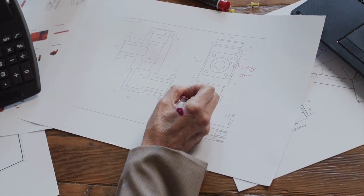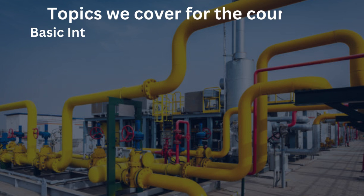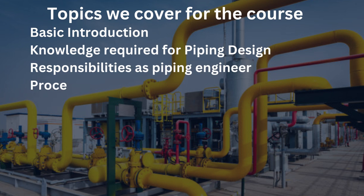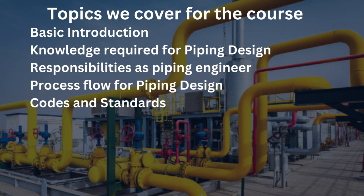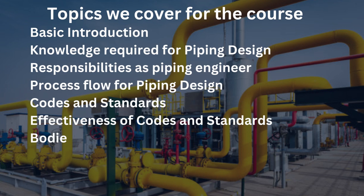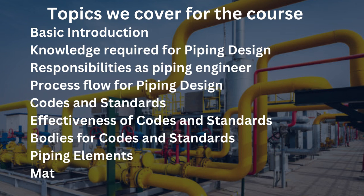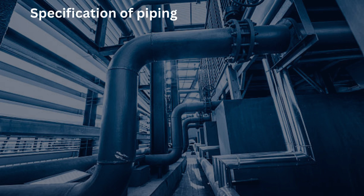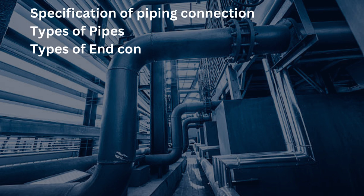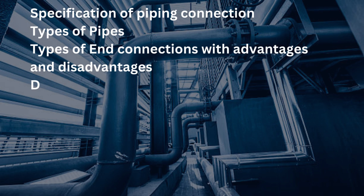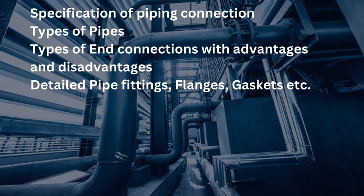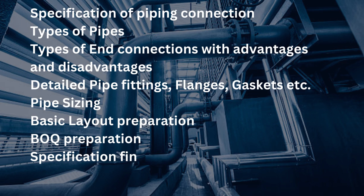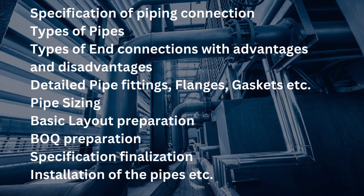Topics we cover for the course are as follows: Basic Introduction, Knowledge Required for Piping Design, Responsibilities as Piping Engineer, Process Flow for Piping Design, Codes and Standards, Effectiveness of Codes and Standards, Bodies for Codes and Standards, Piping Elements, Material Selection of Piping Components, Specification of Piping Connection, Types of Pipes, Types of End Connections with Advantages and Disadvantages, Detailed Pipe Fittings, Flanges, Gaskets, Pipe Sizing, Basic Layout Preparation, Block Preparation, Specification Finalization, and Installation of the Pipes.